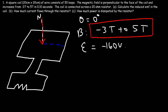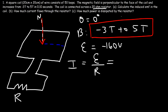For this video we won't worry about the negative sign. To calculate the current, it's the induced EMF divided by the resistance. The resistance is 20 ohms, so 160 volts divided by 20 ohms equals 8 amps — that's the current flowing in the circuit.